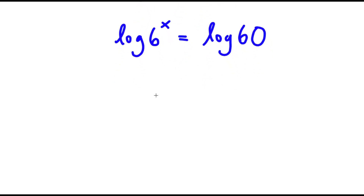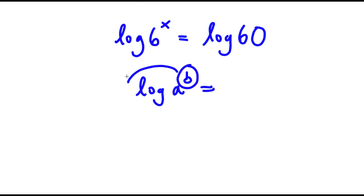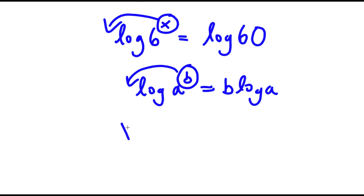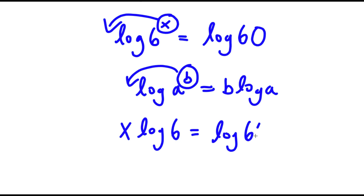Now, if I have something in the form log a to the power of b, I can move this exponent b to the front. So this is going to equal b times log a. So in this case, I have log 6 to the power of x, and I can move x to the front. So now I have x times log 6 is equal to log 60.